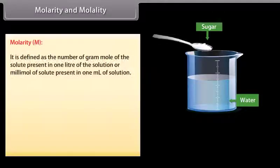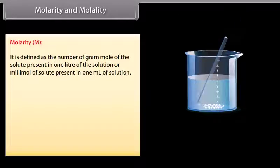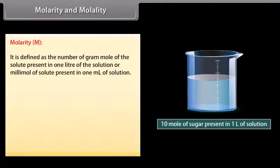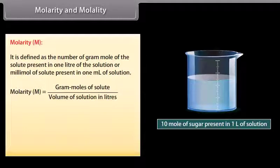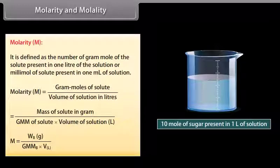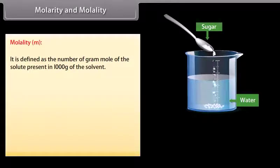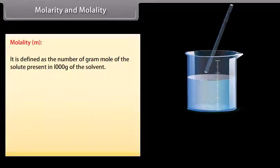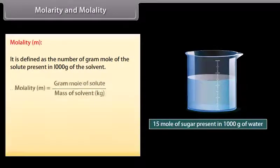Molarity is defined as the number of gram moles of the solute present in one liter of solution, or millimoles of solute present in one milliliter of solution. Mathematically, M = WB (in grams) / (gram mole mass of B × volume of solution in liters). A solution having molarity equal to one is called a molar solution. Molality is defined as the number of gram moles of the solute present in one thousand grams of the solvent. It is represented by small m.